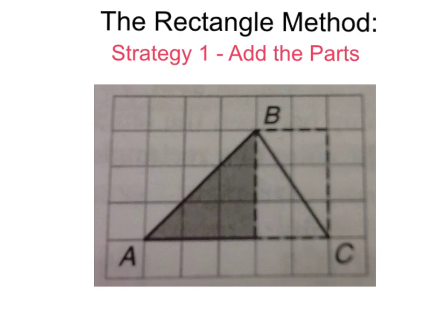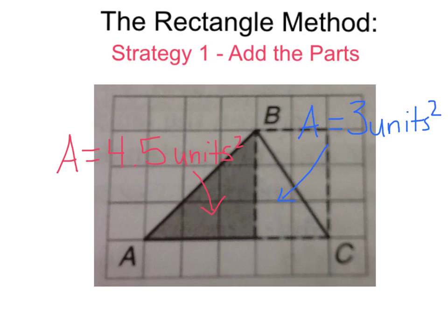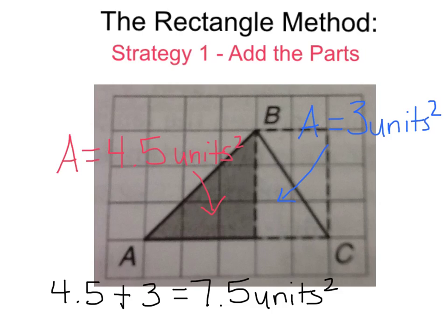Next, I am going to draw a rectangle around the figure on the right. The area of this rectangle is six square units. If you count the boxes inside the rectangle, you will come up with six. The shaded region is half of the rectangular region, so its area is three square units. Here are the areas of both triangles. We need to take both of these areas and add them together to get the total area for the entire triangle. 4.5 plus 3 equals 7.5 units squared.